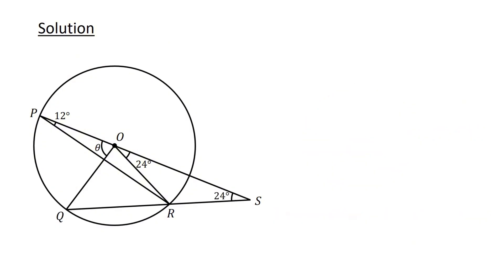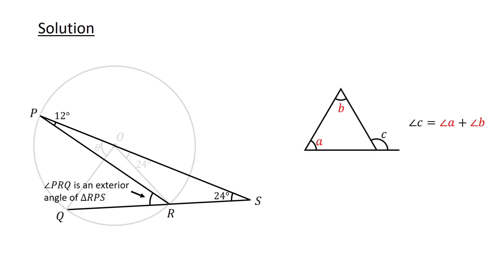Following this, let's focus on triangle RPS and the line segment QRS. Angle PRQ is an exterior angle of triangle RPS. Recall that an exterior angle equals the sum of interior opposite angles.